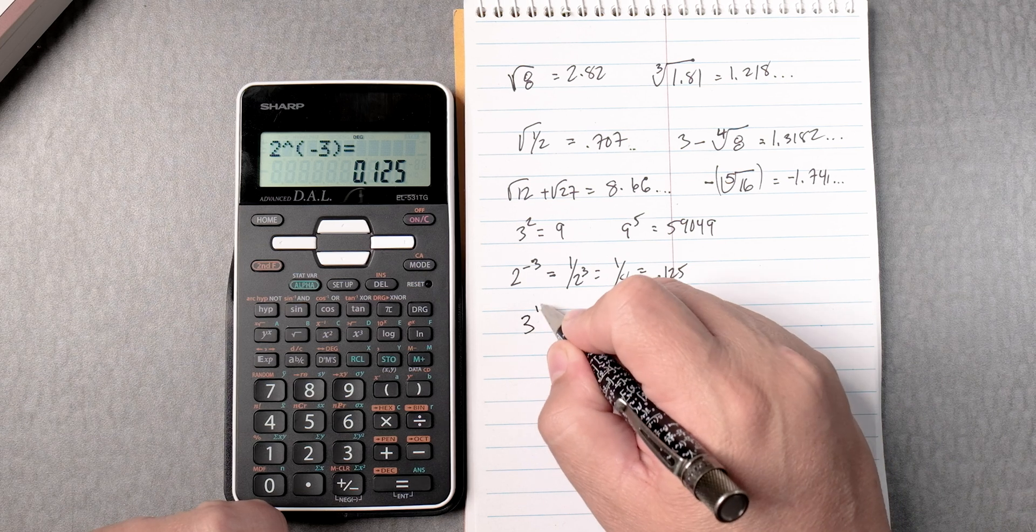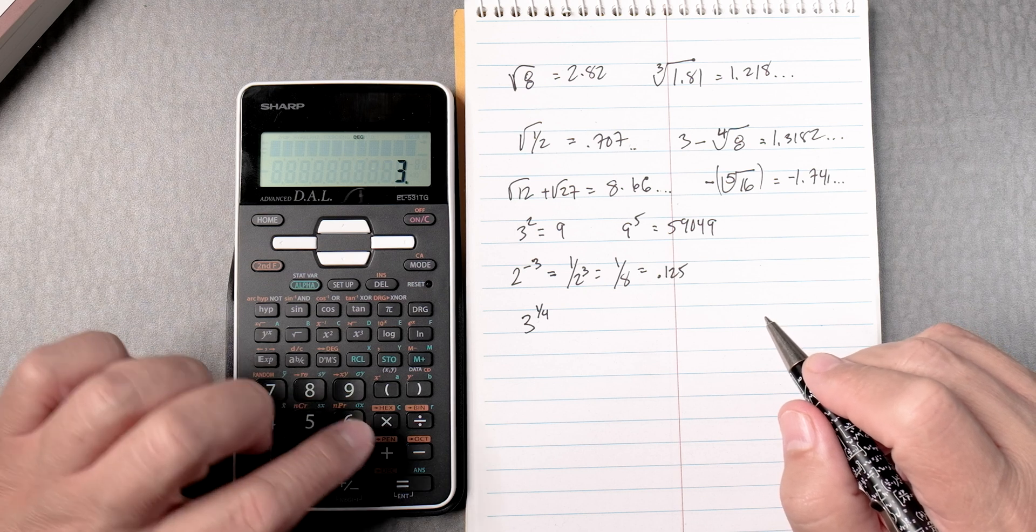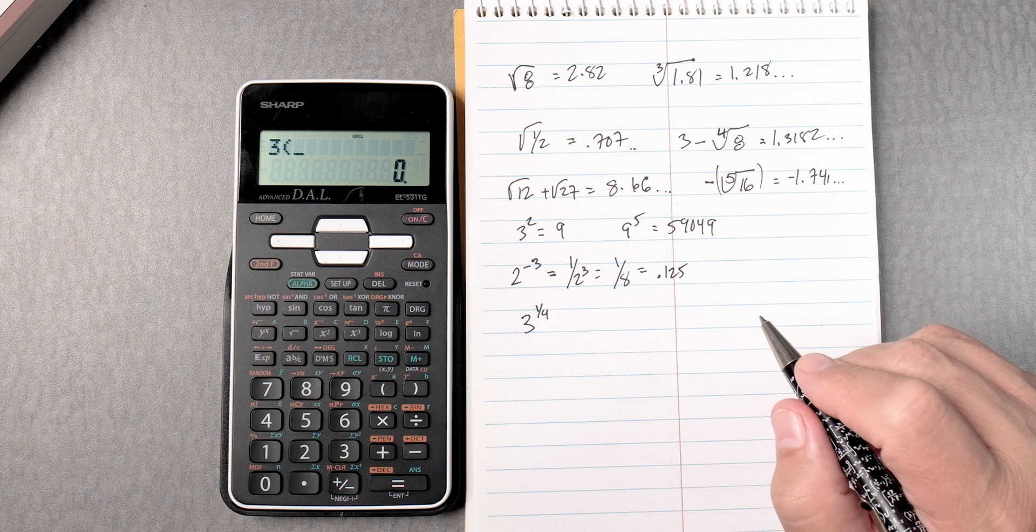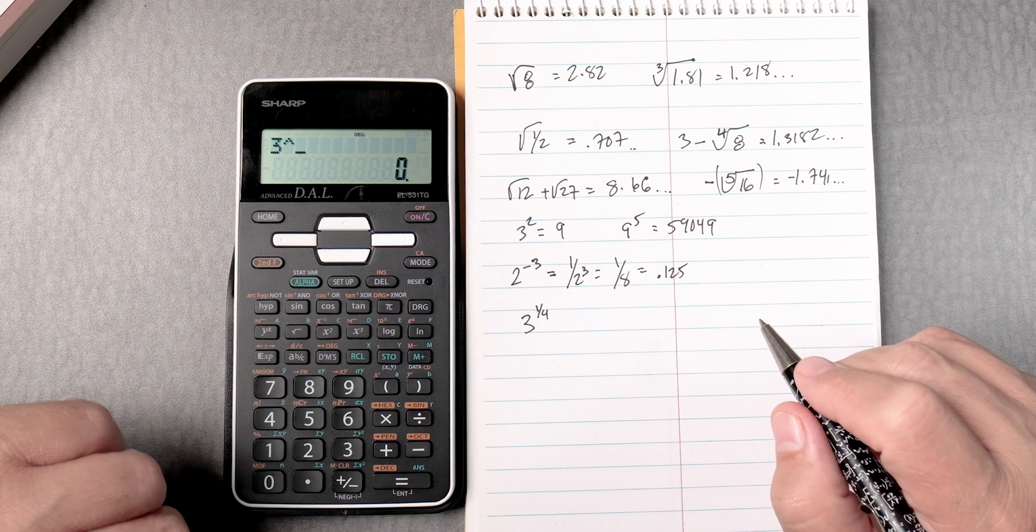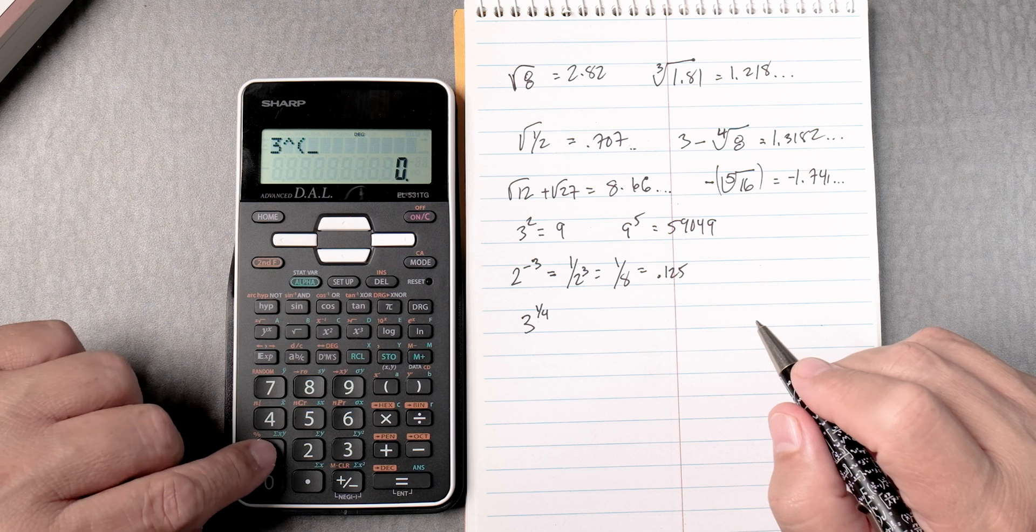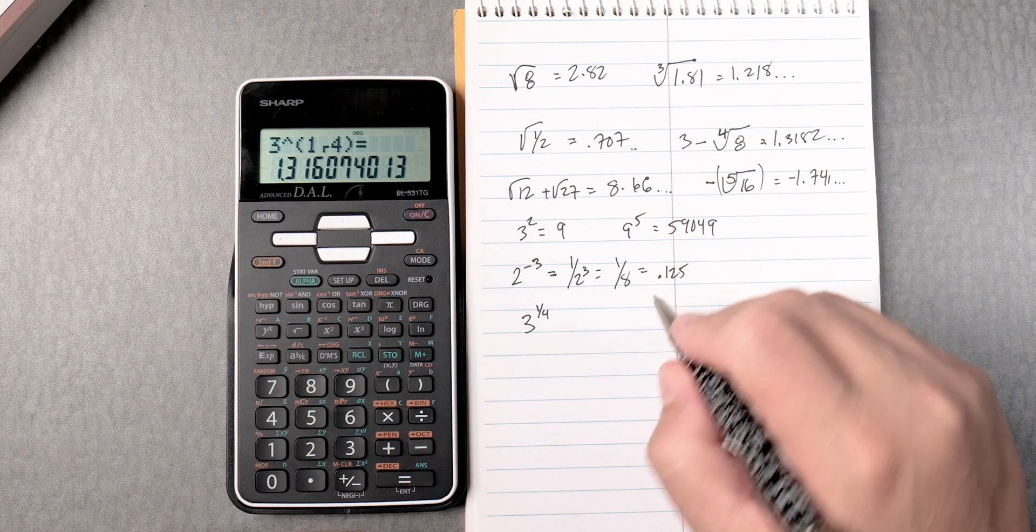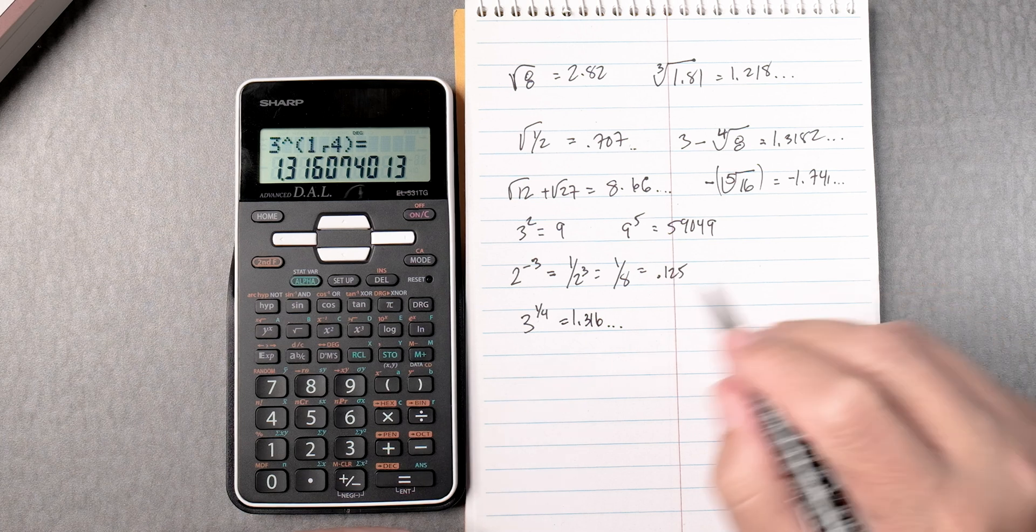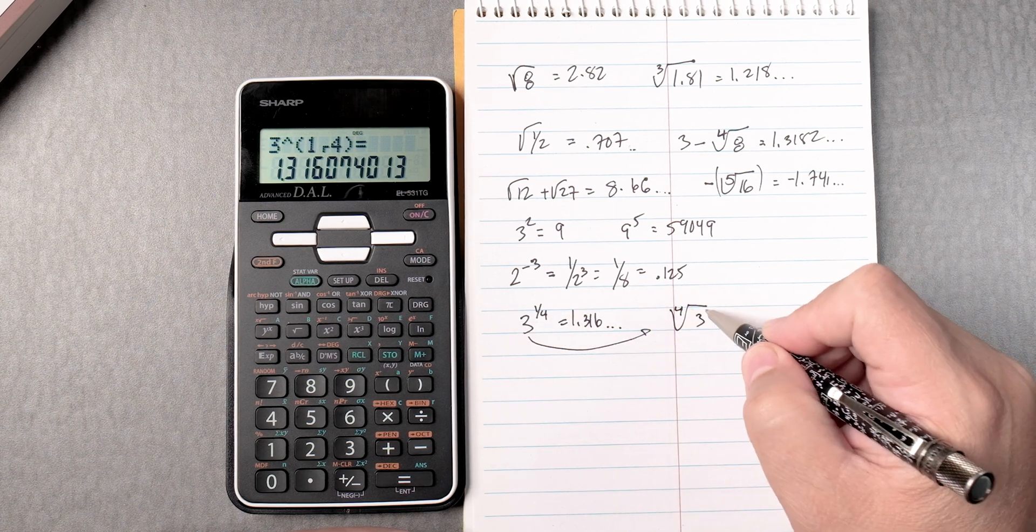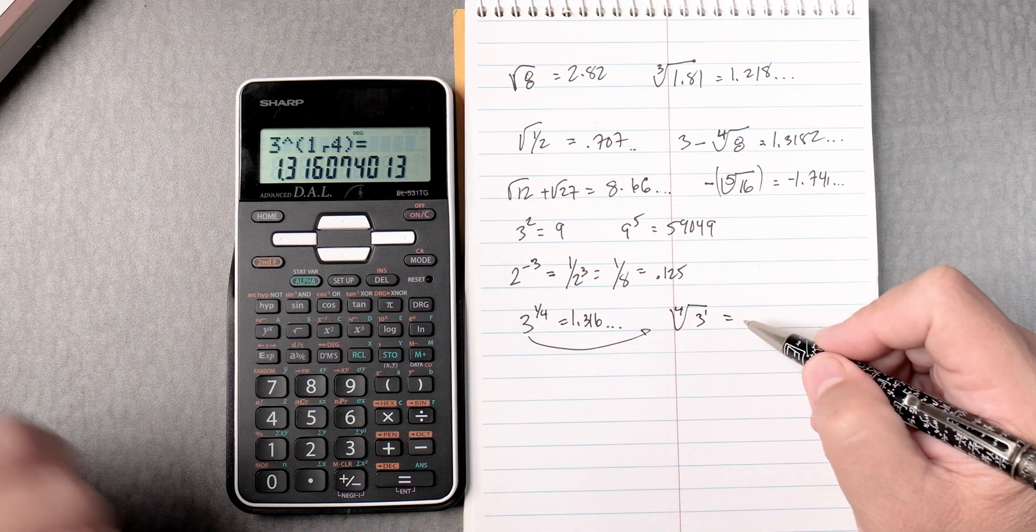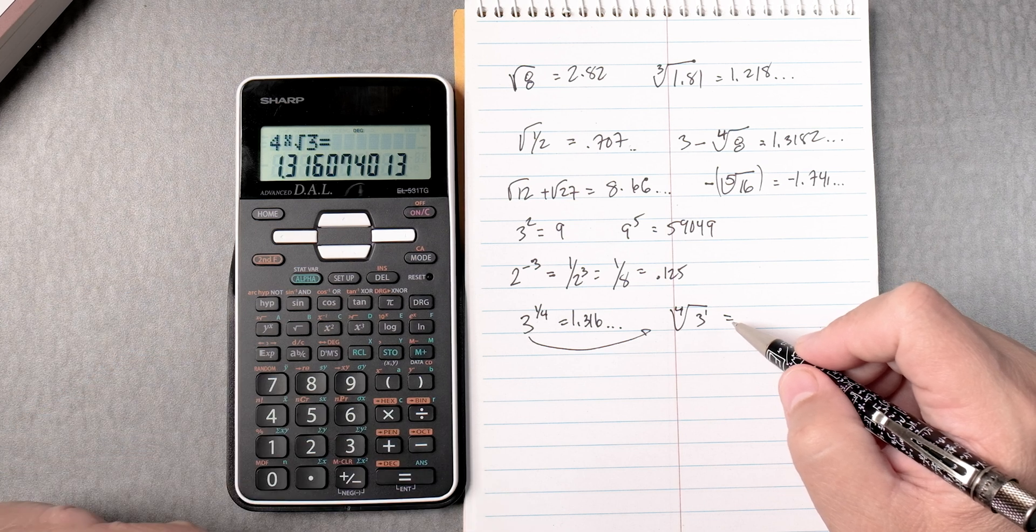How about 3 to the 1 fourth power. This one, we get 3, and we're going to have to put parentheses. Let's erase that. We go 3, y to the x, then put parentheses. Then we can say 1, abc, 4. Close it. Looks good. Equals 1.316, and it keeps going. This, of course, is the fourth root of 3. That 4 is there on the index, and that 1 is right here. So this one, we can do 4, second, y to the x, 3 equals, same answer.